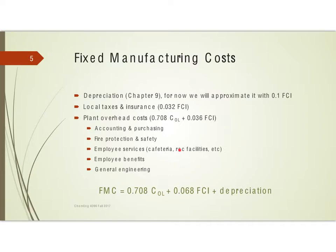Recognize that these are estimates. For fire protection and safety, a plant with very low risk — not much dust, no explosive materials — won't need to spend as much, whereas a facility with highly flammable or explosive materials will have a large cost there. So these are guidelines. We approximate the fixed manufacturing costs with a formula where depreciation may be approximated as 0.1 times FCI, or refined in chapter 9.